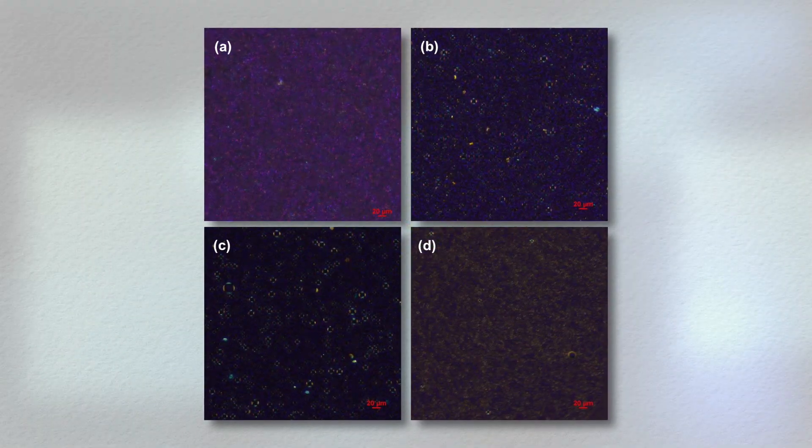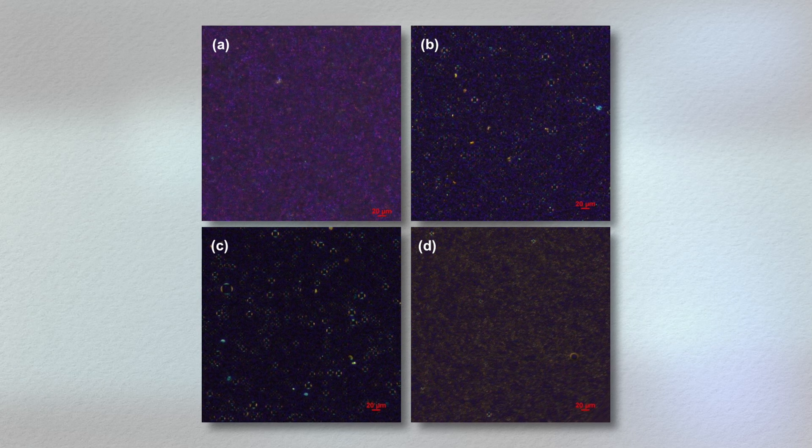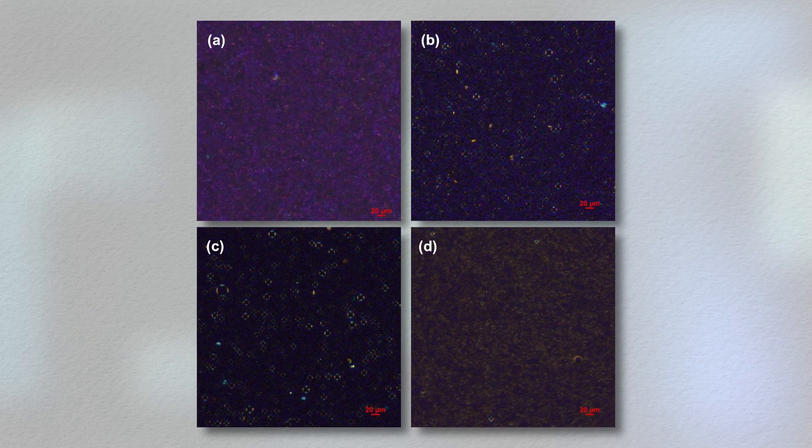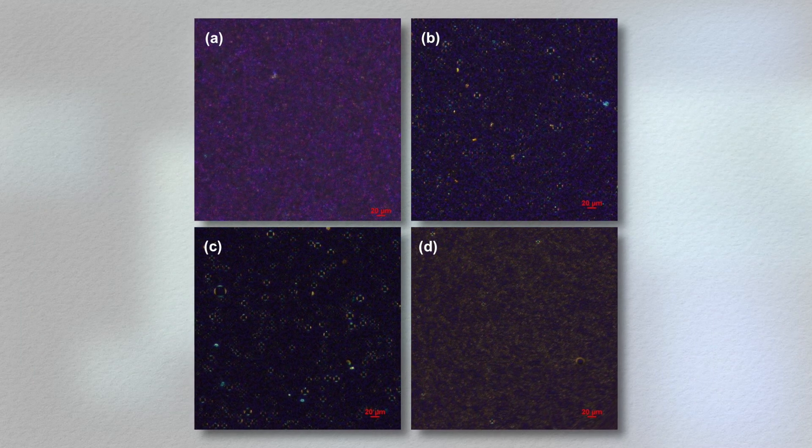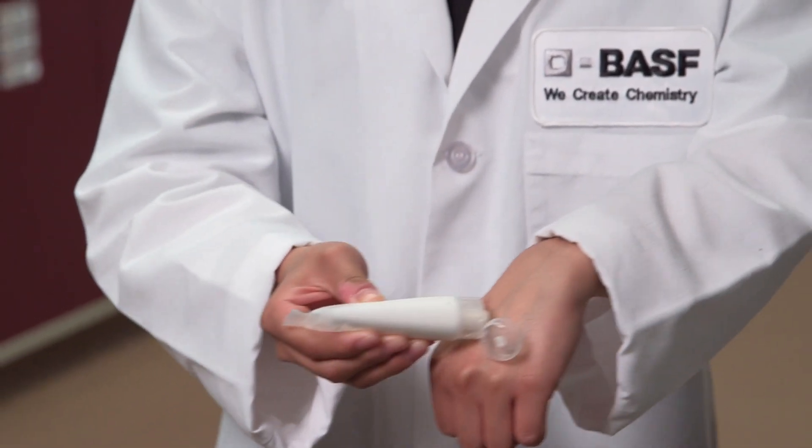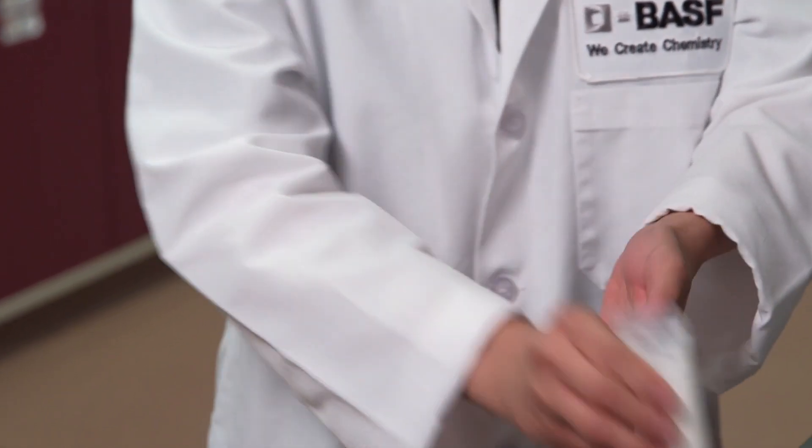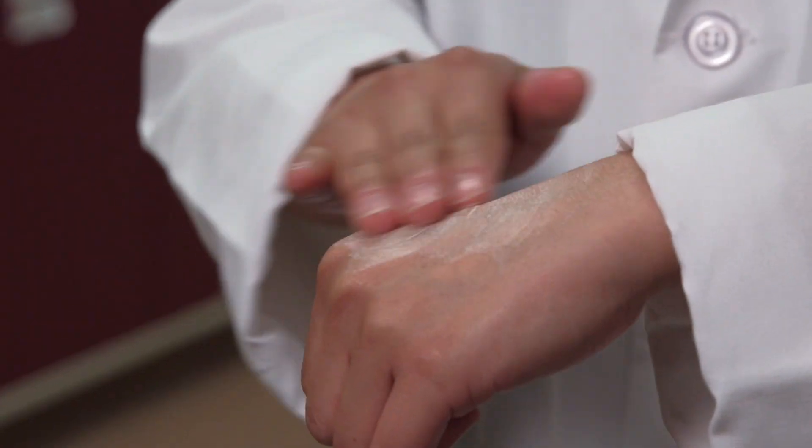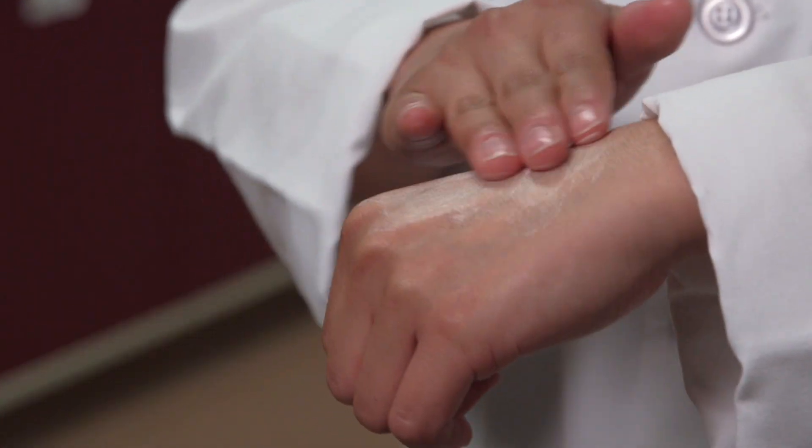Cross-polarized microscopy is best used to visualize crystalline phases in the formulation, including those from fatty alcohols or APIs. Cream formulations are complex systems, but choosing the right excipients for the formulation will result in a robust cream that meets targeted formulation properties.